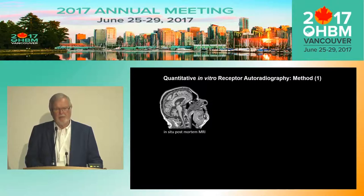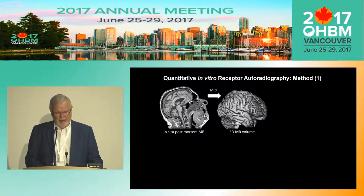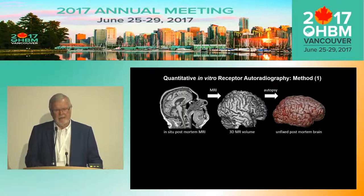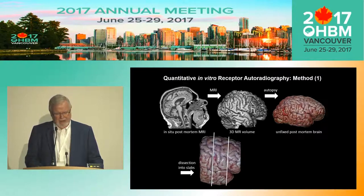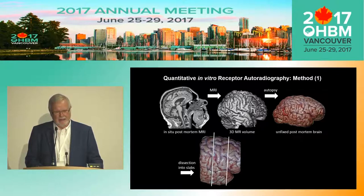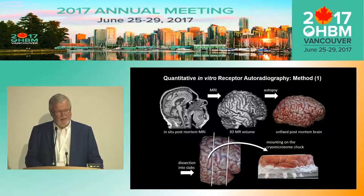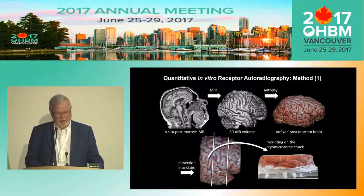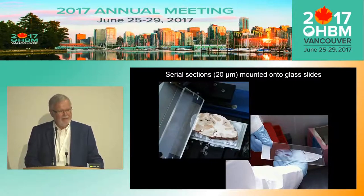The first thing is we do a post-mortem MRI of the brain. Then, during autopsy, we remove the brain, and the brain must be unfixed — no chemical fixations. It must be a fresh brain, and the post-mortem delay is normally below 24 hours. Then we cut the whole brain into big slabs, because we cannot freeze the whole brain without getting cracking artifacts. The slabs are deep frozen in isopentane at minus 70 degrees, mounted on the chuck of a huge cryomicrotome, and then we cut the slab into 20-micrometer thick sections.